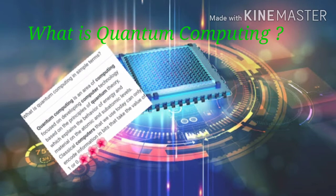Now how do quantum computers work? Quantum computers perform calculations based on the probability of an object's state before it is measured instead of just 1 or 0.